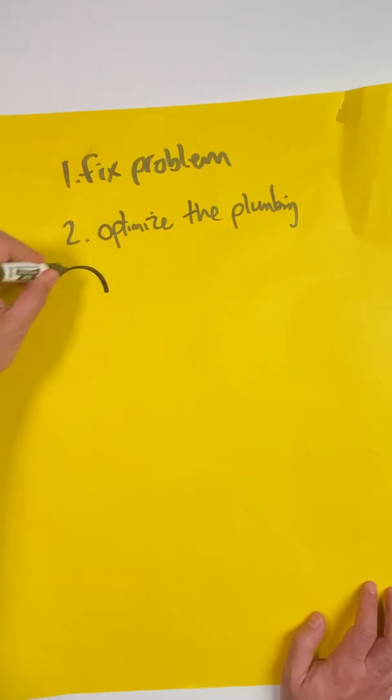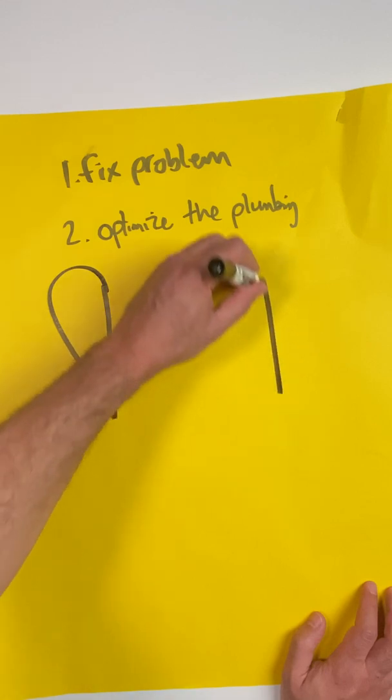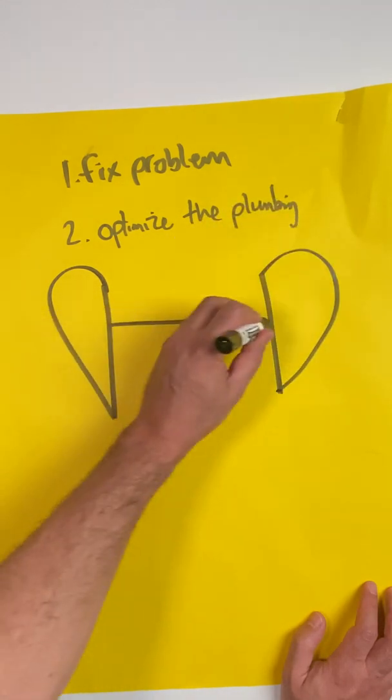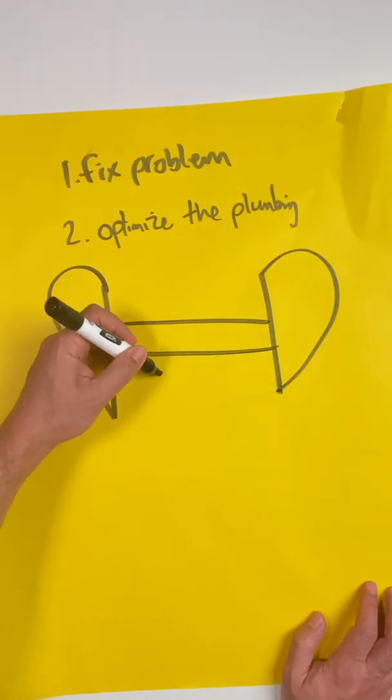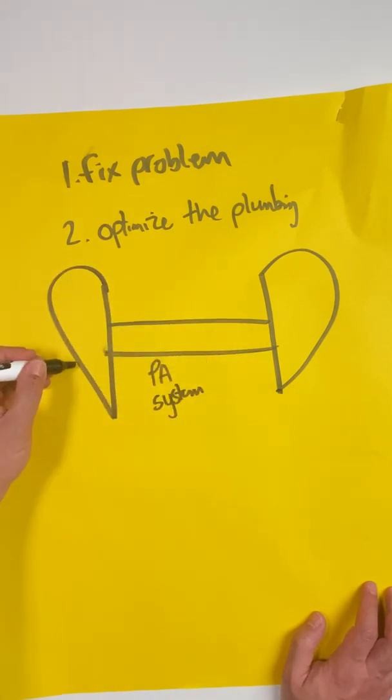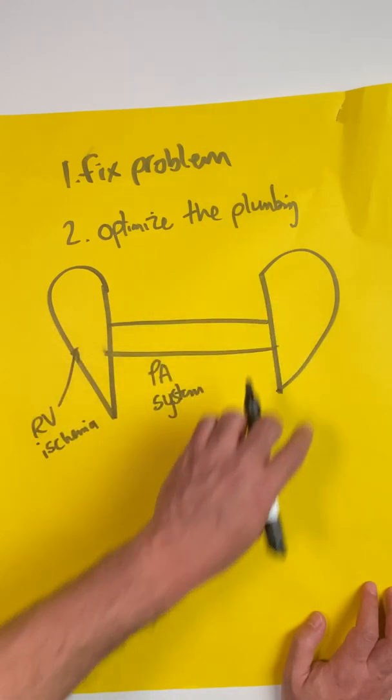What do I mean by plumbing? I mean that you have an RV over here and then you have your LV over here. And in between them, there's the pulmonary arterial vascular system. A couple things can go wrong. The first problem that can happen is that you can have RV ischemia. If we have a decrease in our pump, it's going to decrease blood flow getting across here and into our LV.